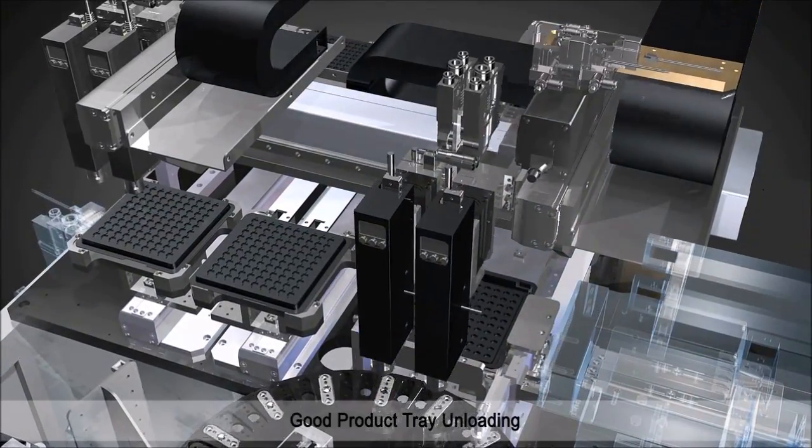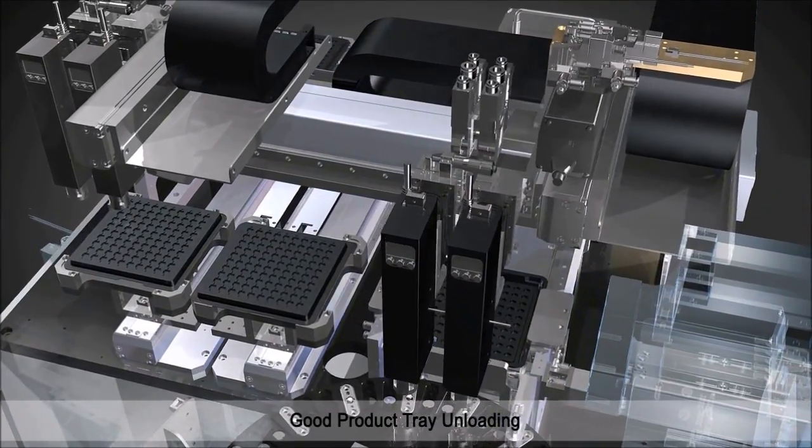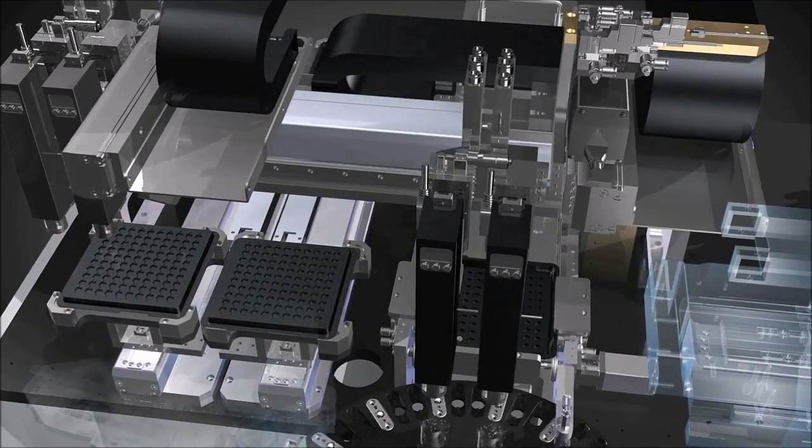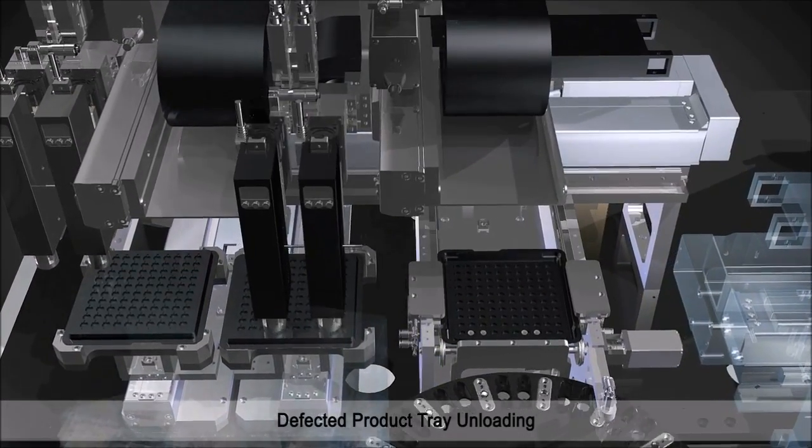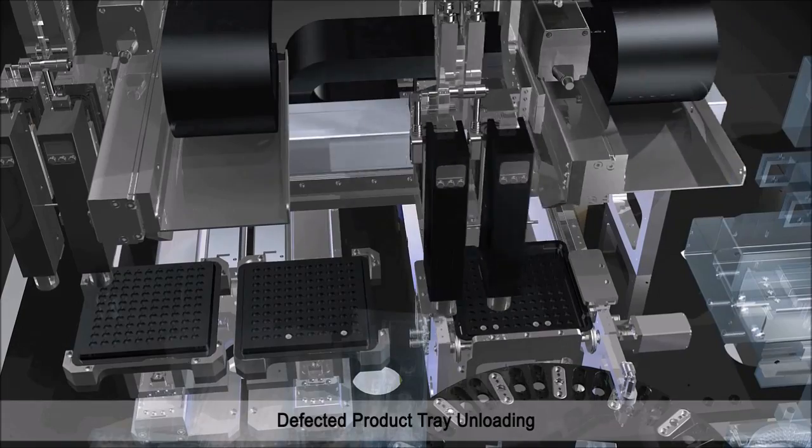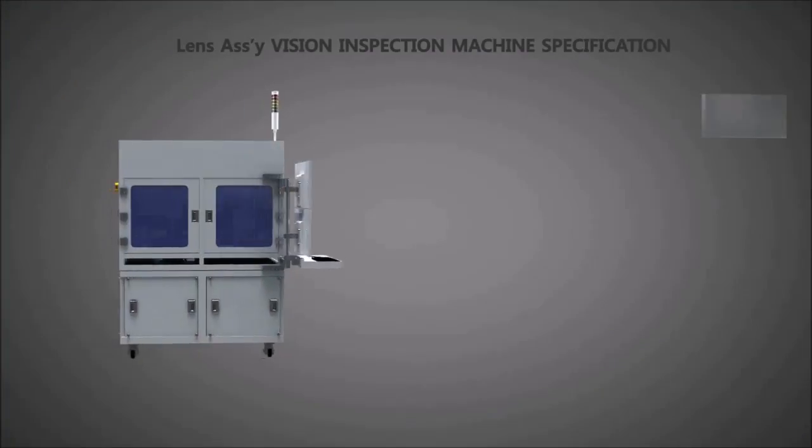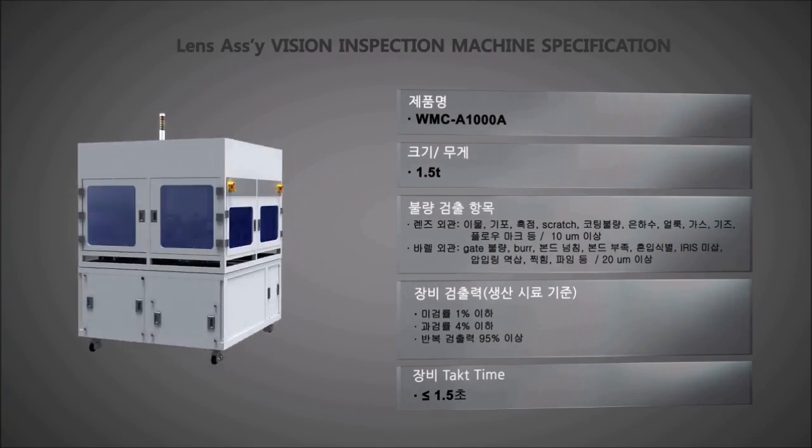After inspection, good products are unloaded to good product tray and defective products are unloaded to defective product tray separately so that it enables efficient production.